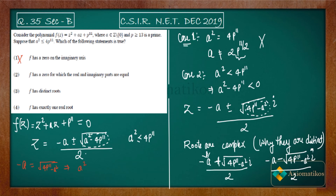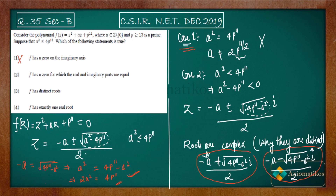Setting the real part equal to the imaginary part leads to 2a² = 4p¹¹, which is the same problem we encountered in case one — it requires p^(11/2) to be an integer, which it is not. So option two is also incorrect. Option three says f has distinct roots — this is correct, as we proved. Option four says f has exactly one real root — this is incorrect, since we are not getting any real roots.